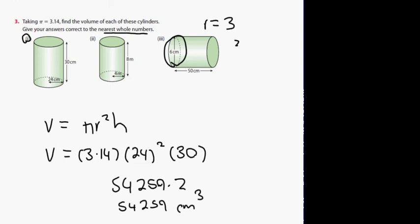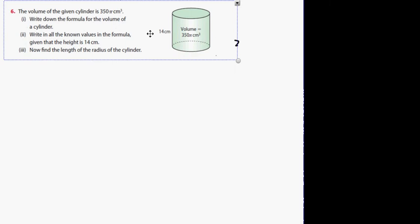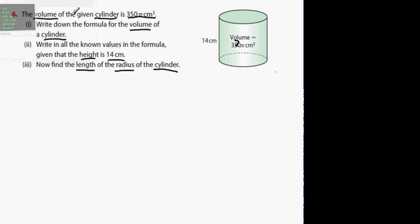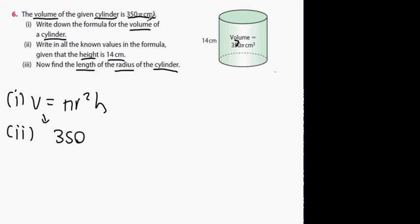Moving on to question 6. Can anyone in the class tell me how would you go about doing question 6? The formula is volume equals pi r squared h. That's the answer to part 1. What about the answer for part 2? Write in all known values in the formula. What do we know? Do we know what the volume is? It's 350 pi. You leave the centimeters out to the end.